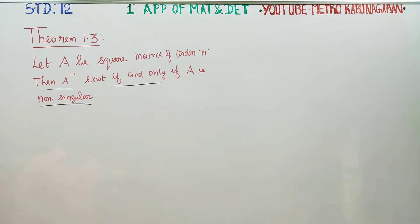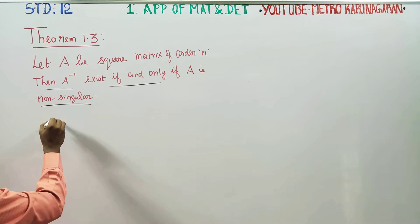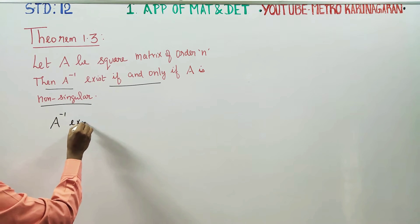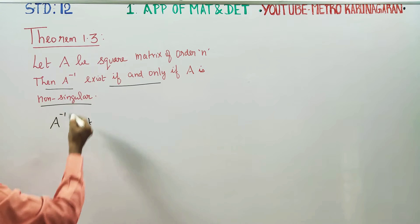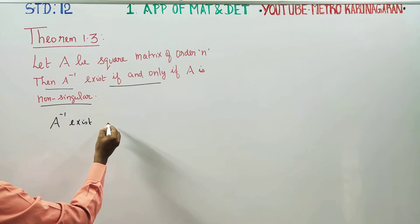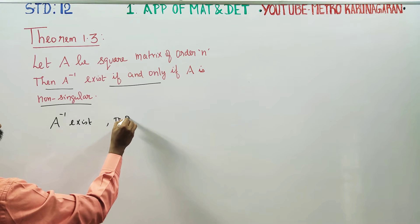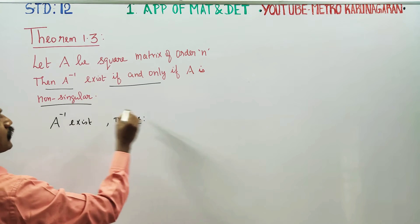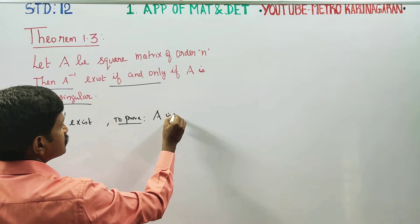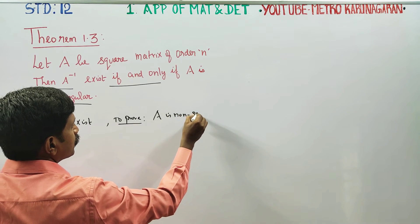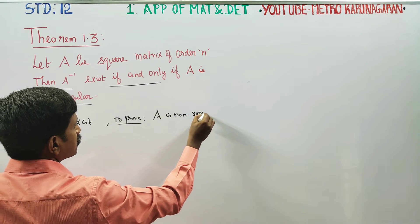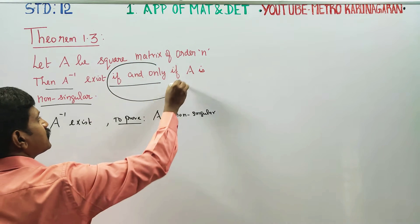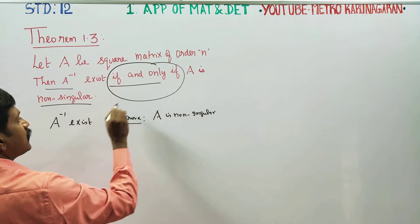We have two proofs to put down. Case 1: A inverse exists — to prove A is non-singular. The phrase 'if and only if' requires a double proof.